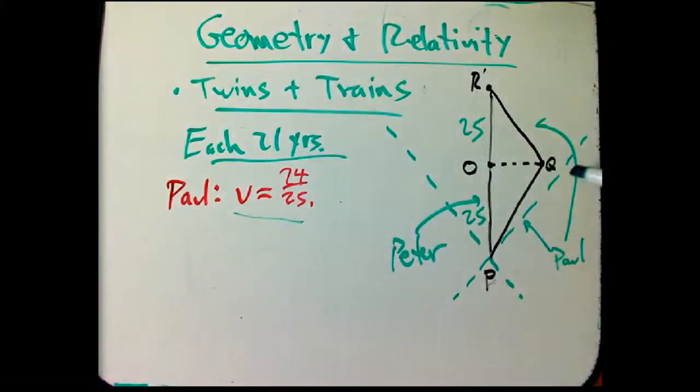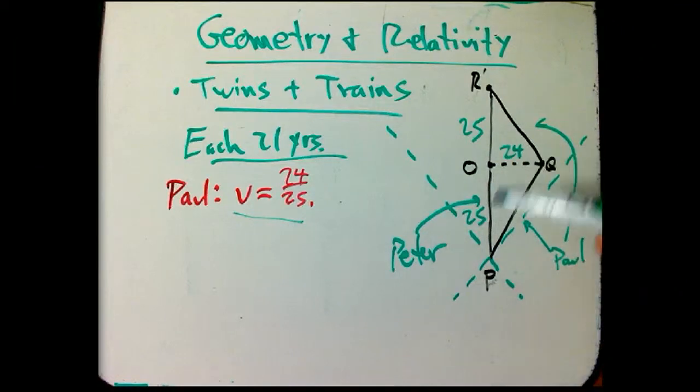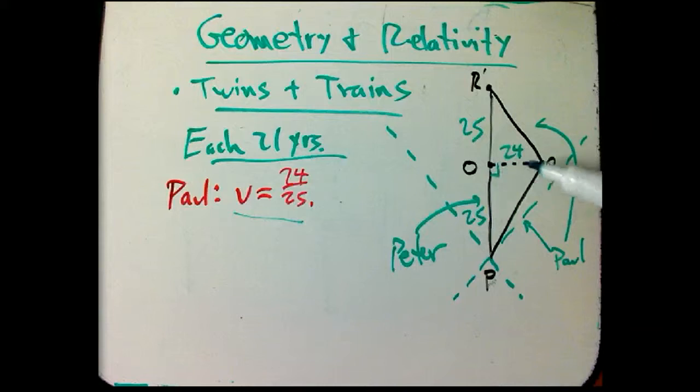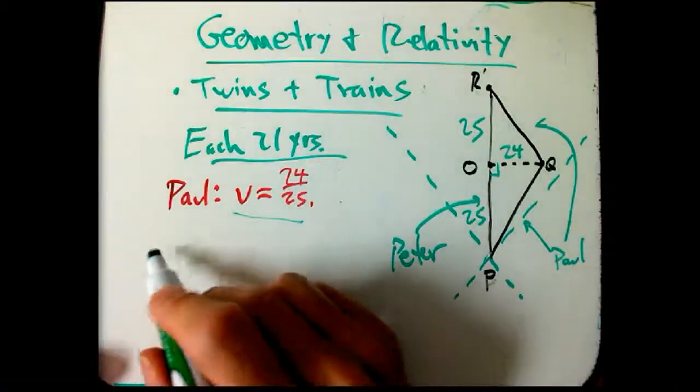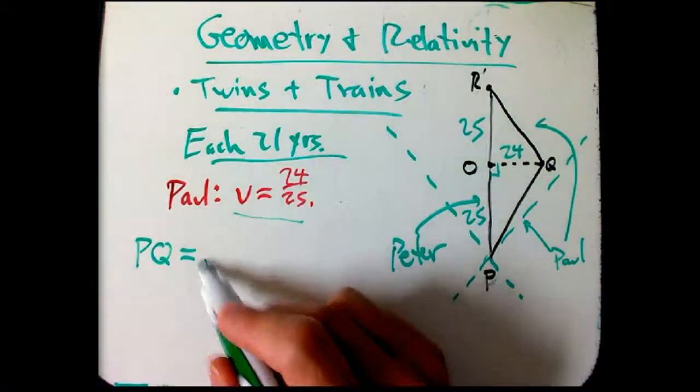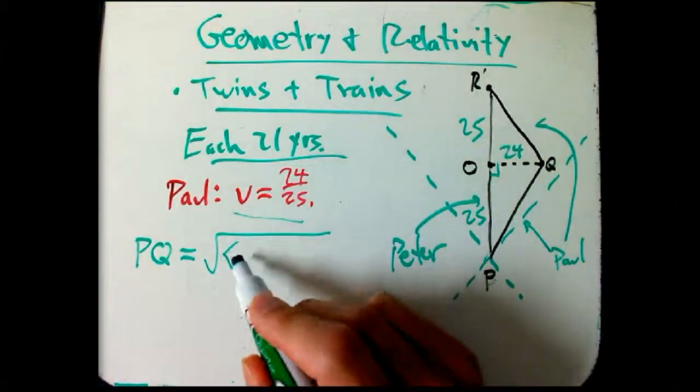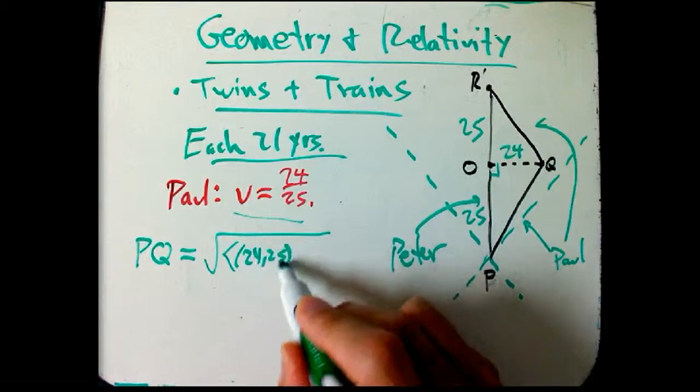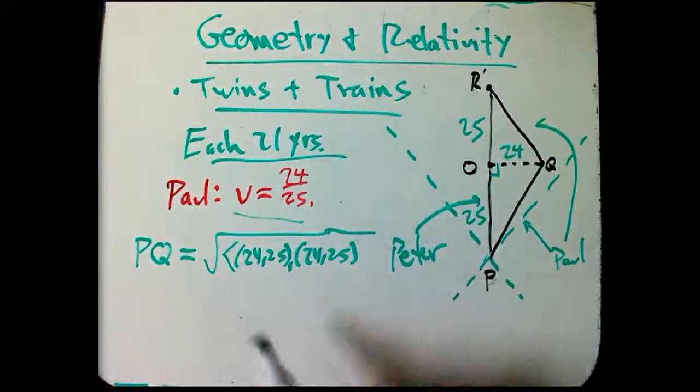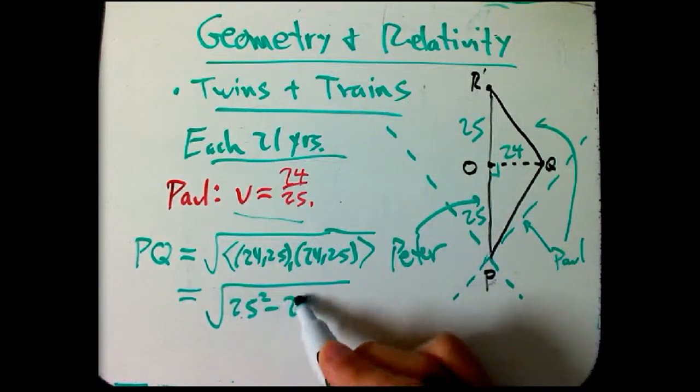Well, we know that the velocity is 24/25ths of the speed of light, so this is going to be 24. So that the ratio of x over t is going to be 24/25ths. And now we just have to do a tiny little bit of geometry on this right triangle. This really is a right triangle. And this is the hypotenuse, but it's a Minkowski right triangle. And so the PQ, what's that going to be? It's going to be the square root of the inner product of PQ with itself. But PQ is the vector 24 comma 25. And I'm going to take that and take the inner product with itself.